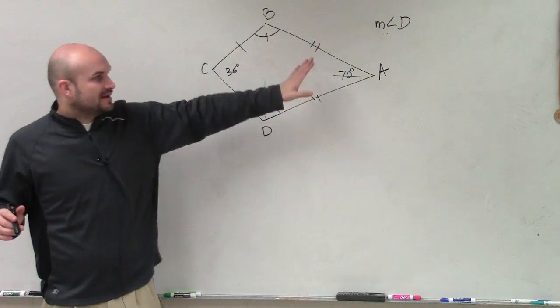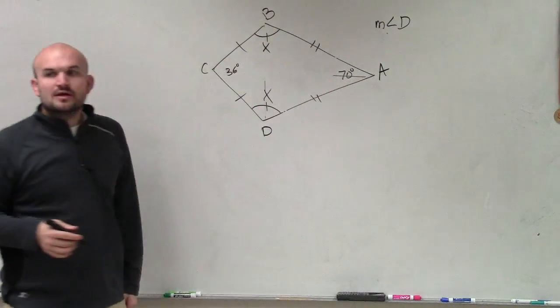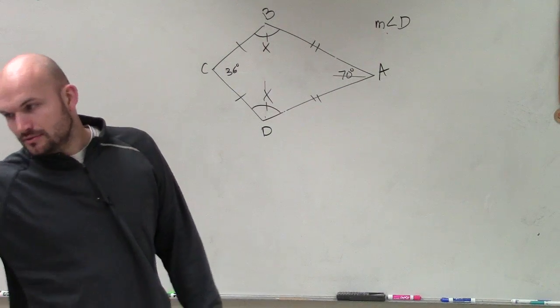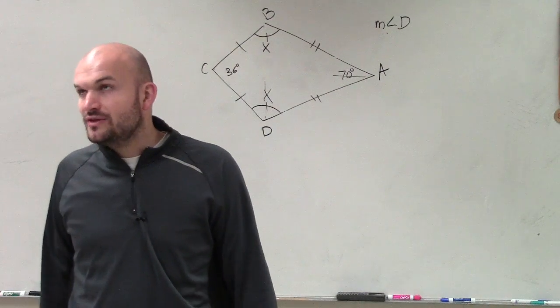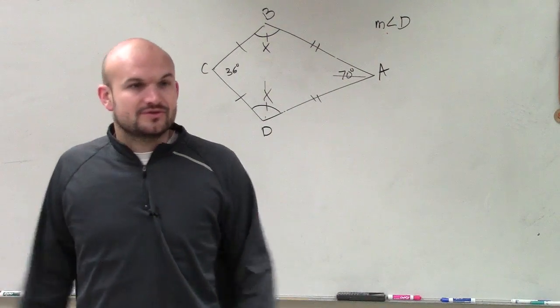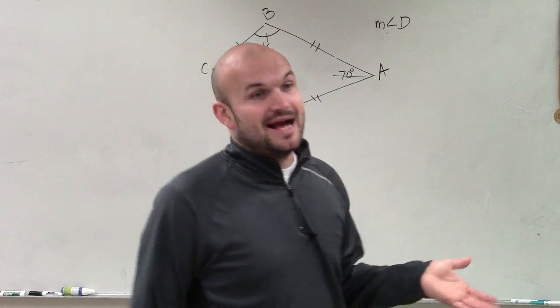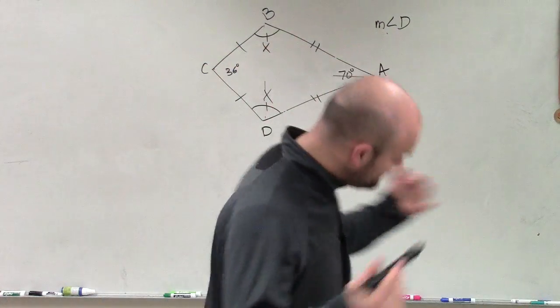So what I'm going to do, instead of using measure of angle D, I'm going to call this x. And if that's x, then that has to be x. So now we know that all the angles in a triangle add up to 180. Then we go to the next figure. All the angles in a quadrilateral add up to 360.